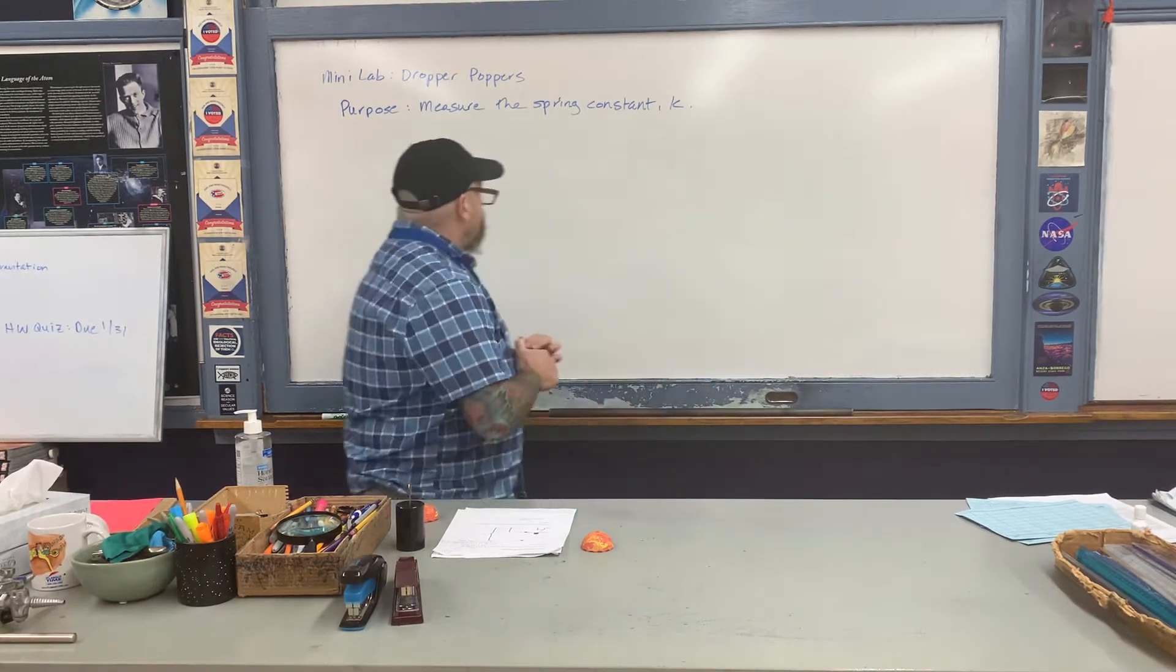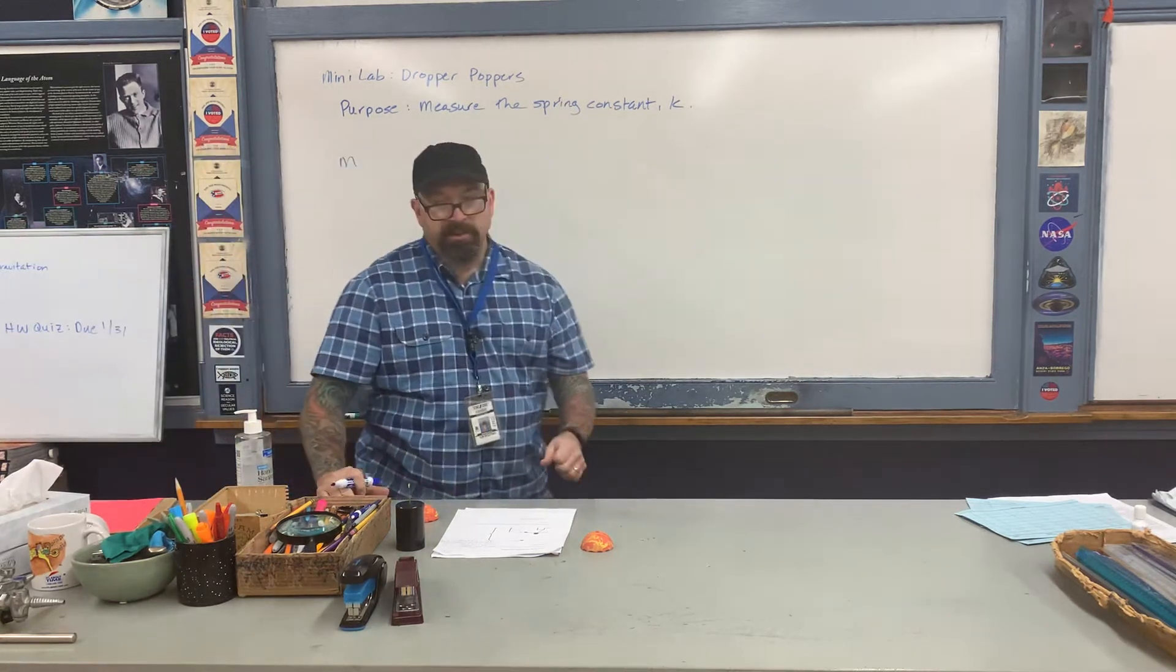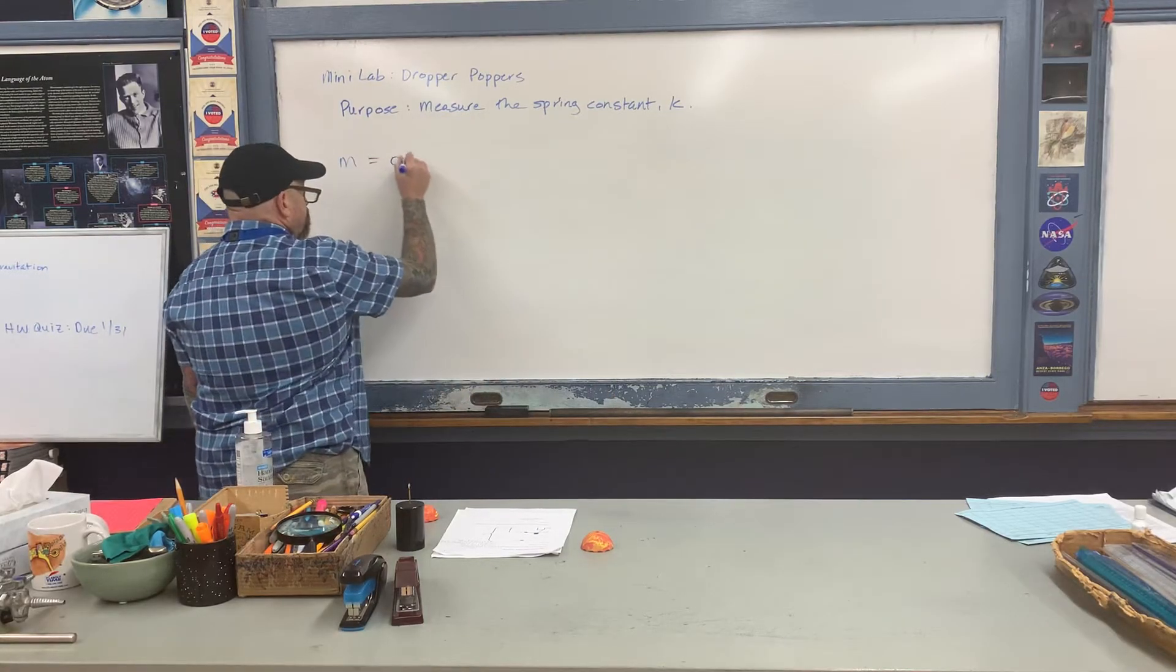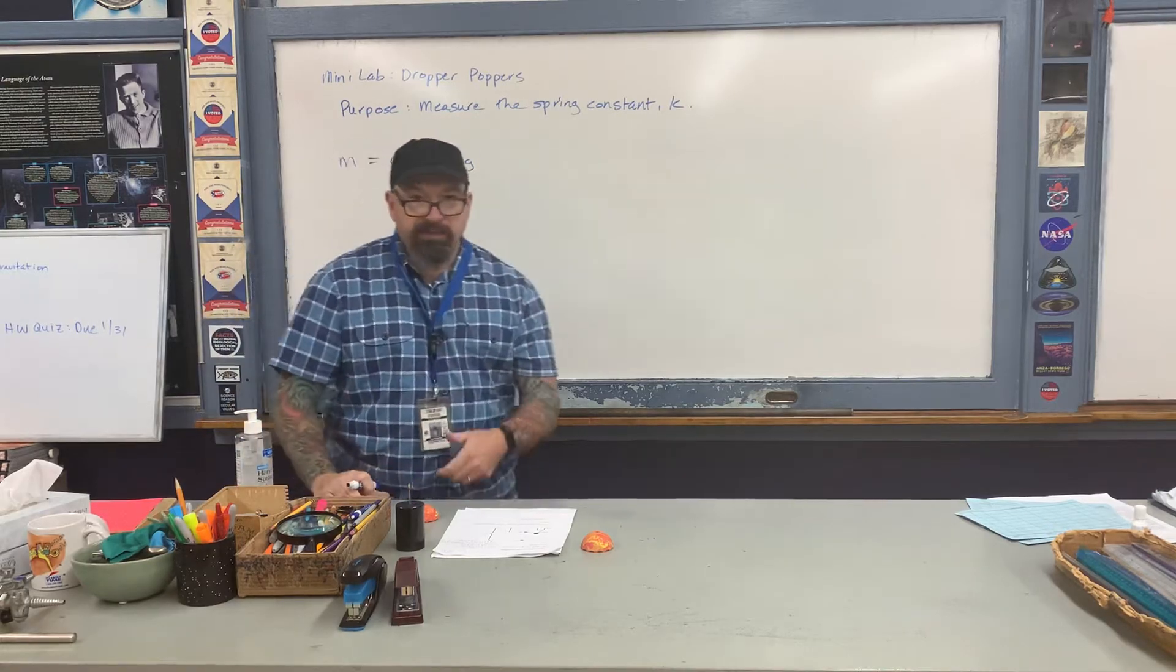Now let me begin to write down the data necessary to complete this lab exercise. Start to put this information into the handout called Mini Lab Dropper Poppers. First, I measured the mass of the dropper popper earlier—it's about 20 grams. However, I'm going to write that in kilograms: 0.02 kilograms.